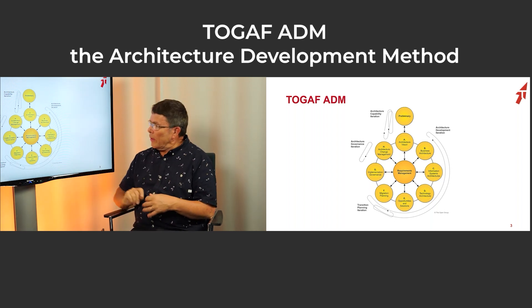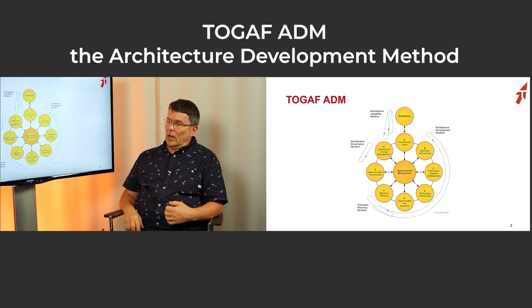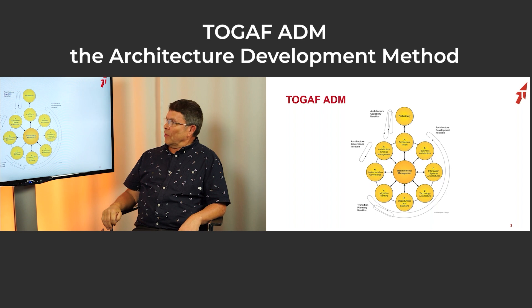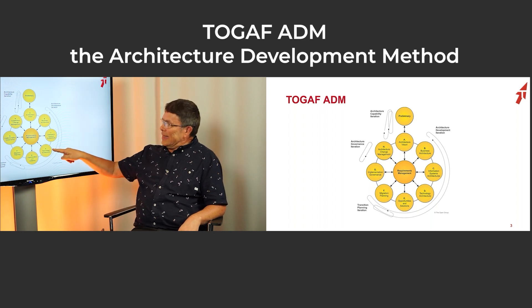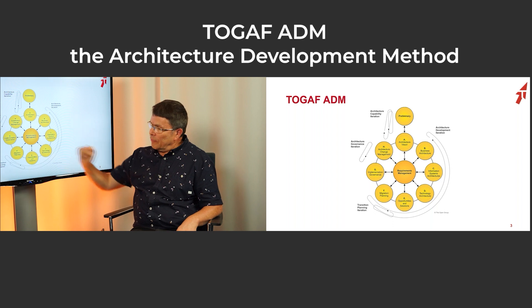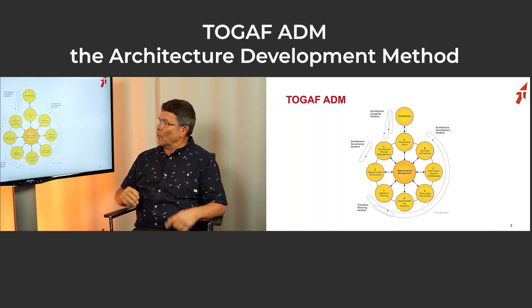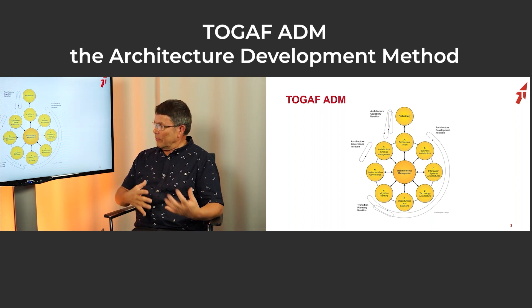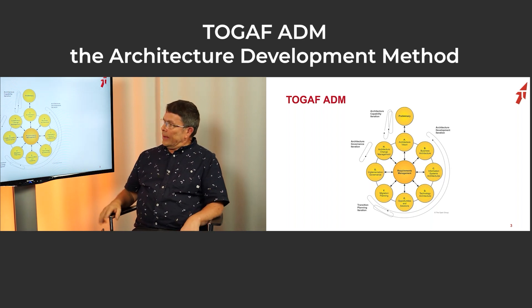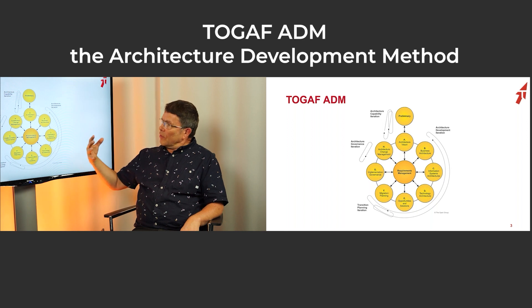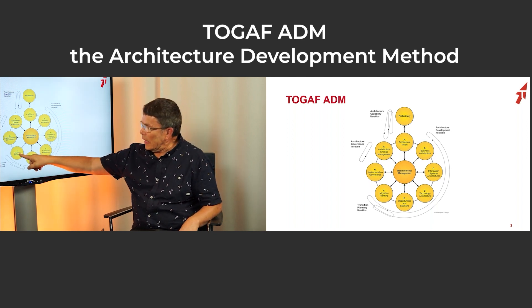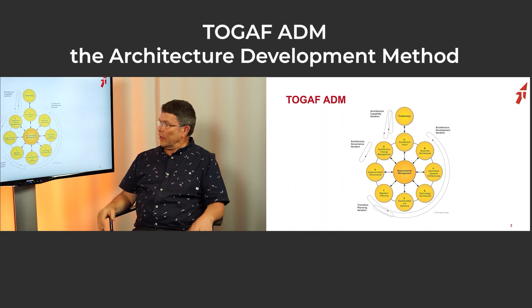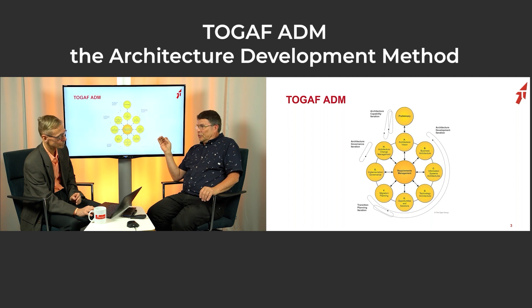In short, architecture vision is about understanding what we are going to do; phases B, C, D are about actually doing it; and phases E and F are about planning for the migration — in which order, with whom, who is going to do what, and where do we get the money. In the TOGAF model the architecture is then official — it's approved, it's somewhere in the repository. After this it's under change control; you can't just change it without a change management process.